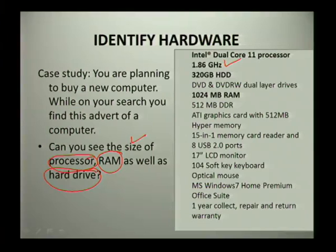If you remember, we talked about what the processor does, what RAM does, and what a hard drive does. It is very important that you know what you are going to use your computer for, so that you know how big the hard drive needs to be and how fast the CPU needs to process your data. These are the three important aspects: your processor, your hard drive, and your RAM.